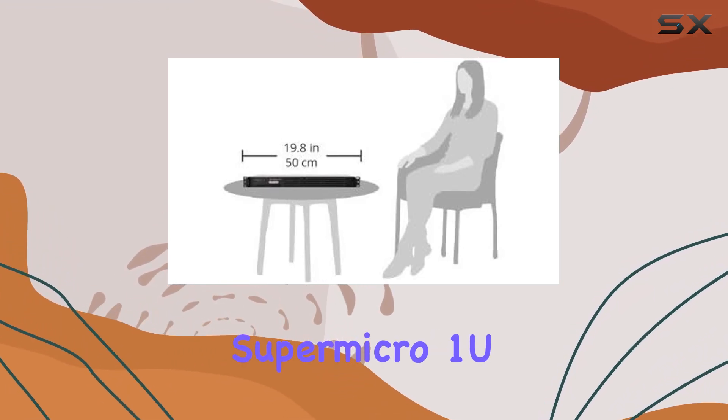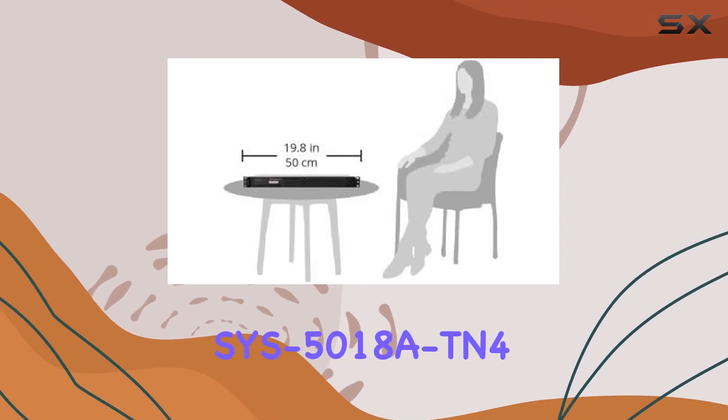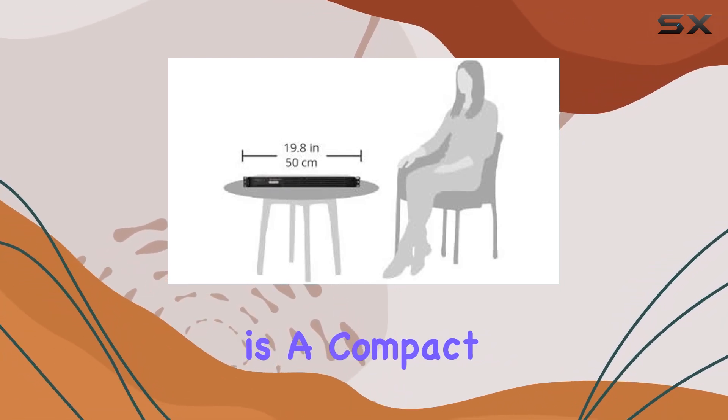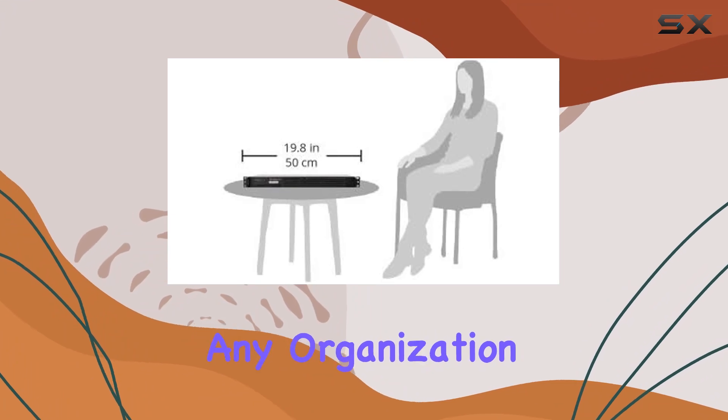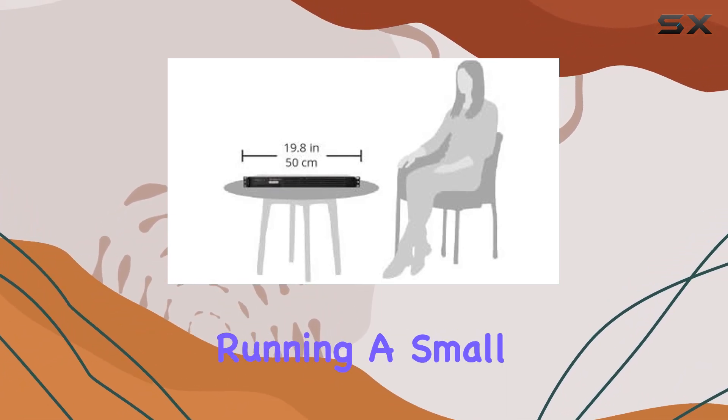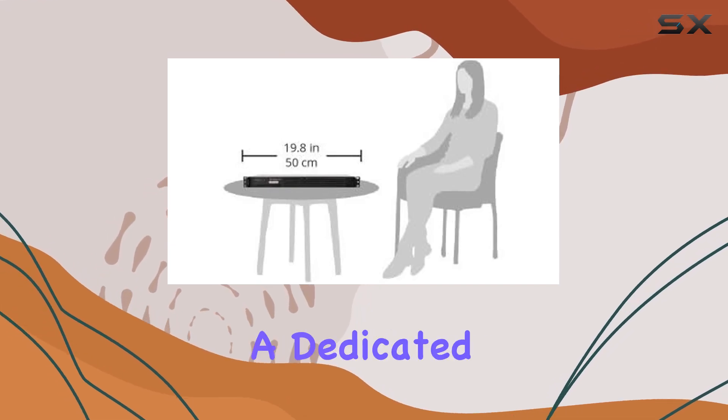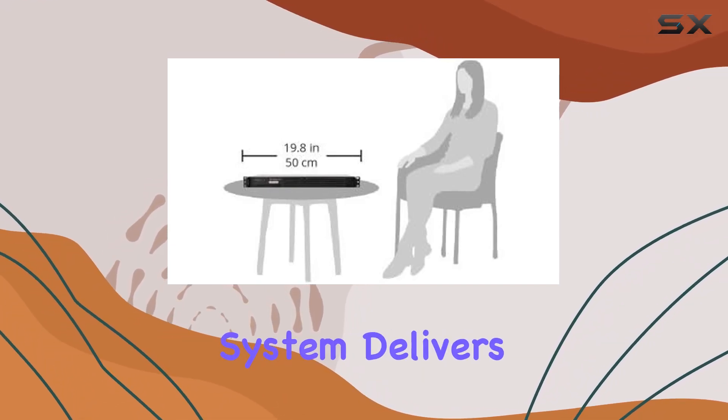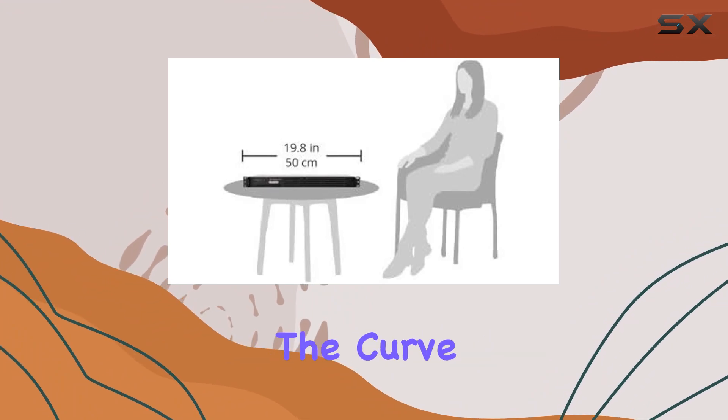In conclusion, the Supermicro 1U rack mount server barebone system Sys5018ATN4 is a compact yet powerful solution for any organization in need of reliable server performance. Whether you're running a small business network or powering a dedicated server, this system delivers the performance and scalability you need to stay ahead of the curve.